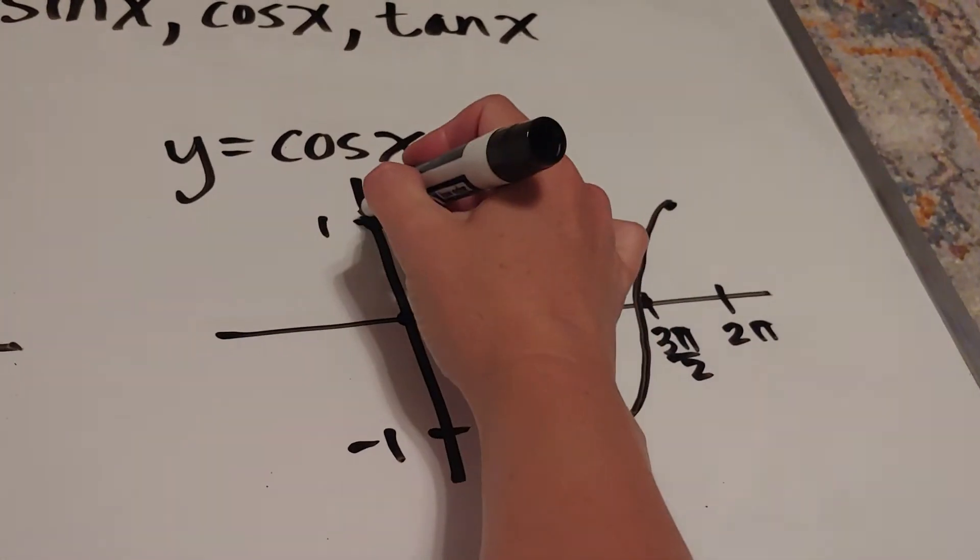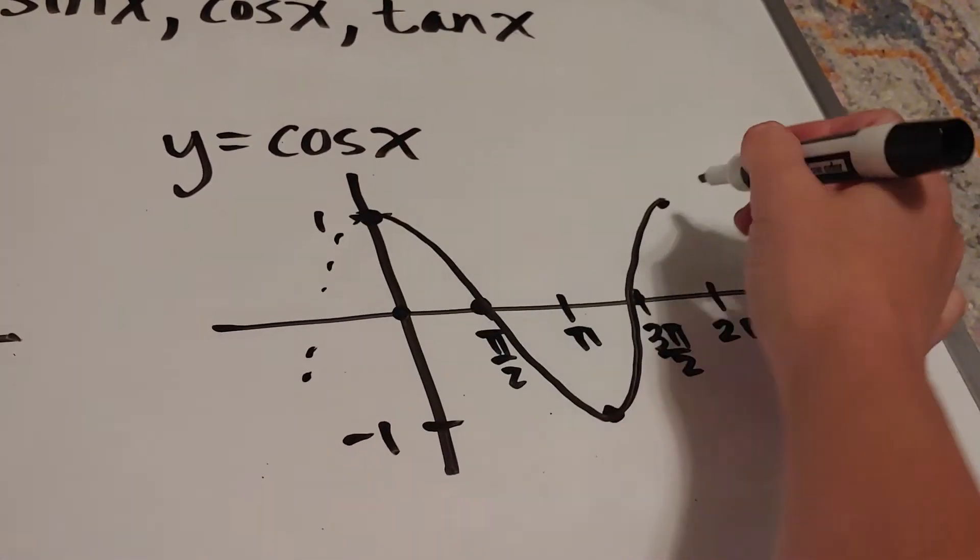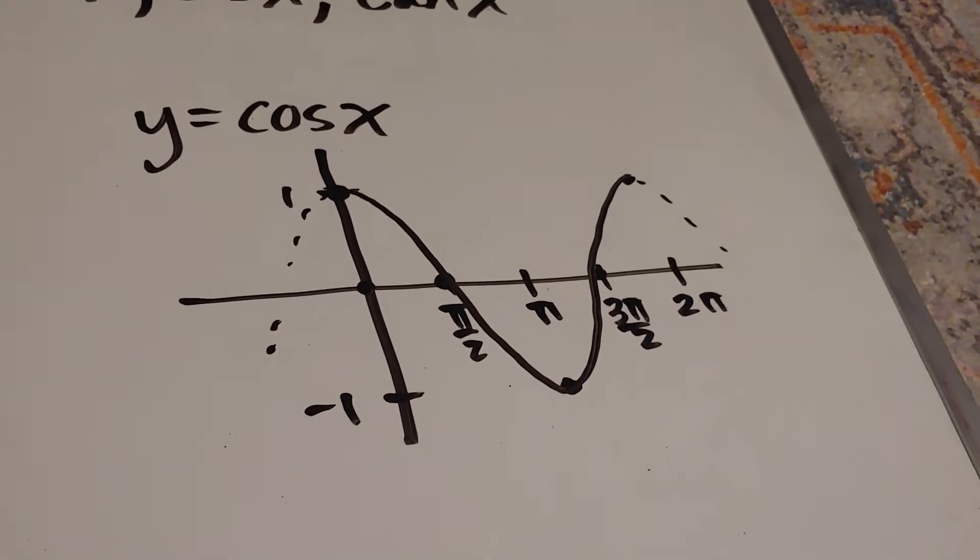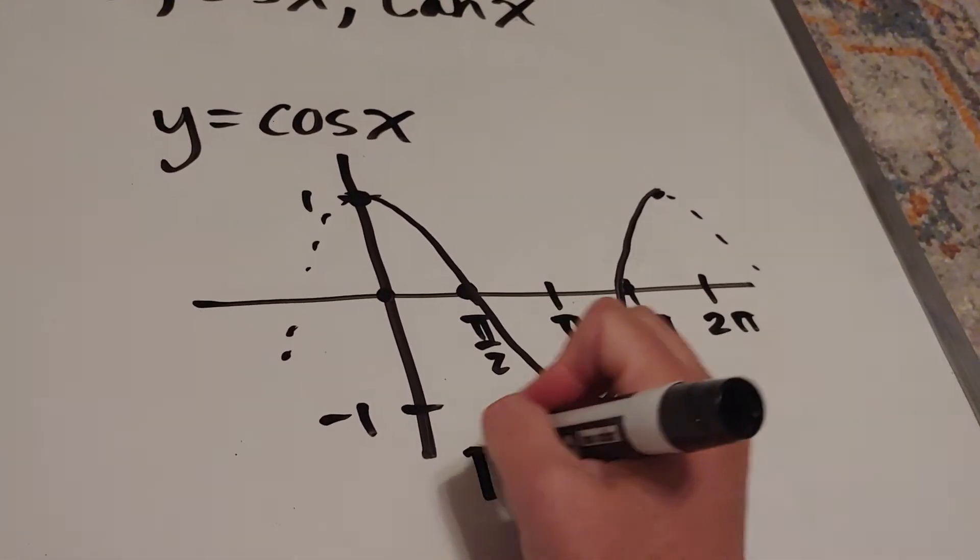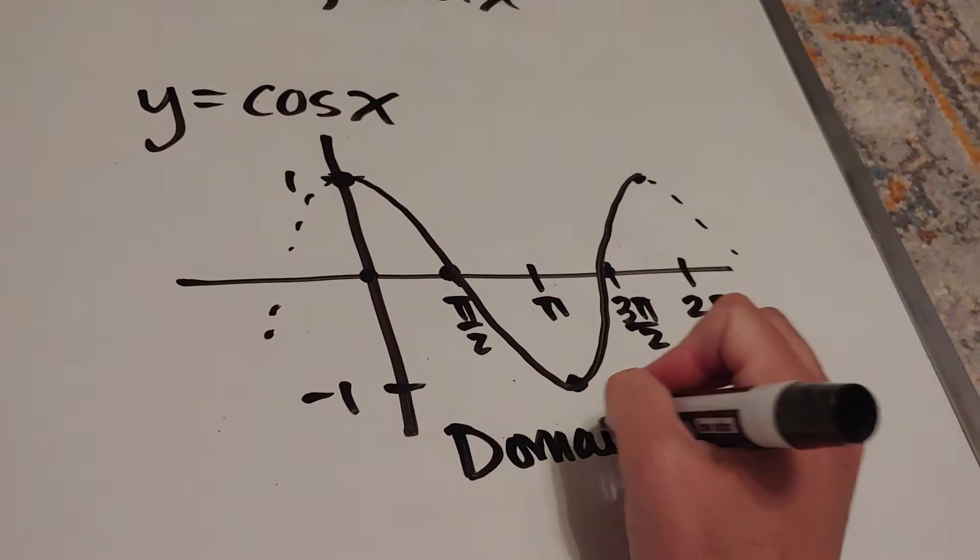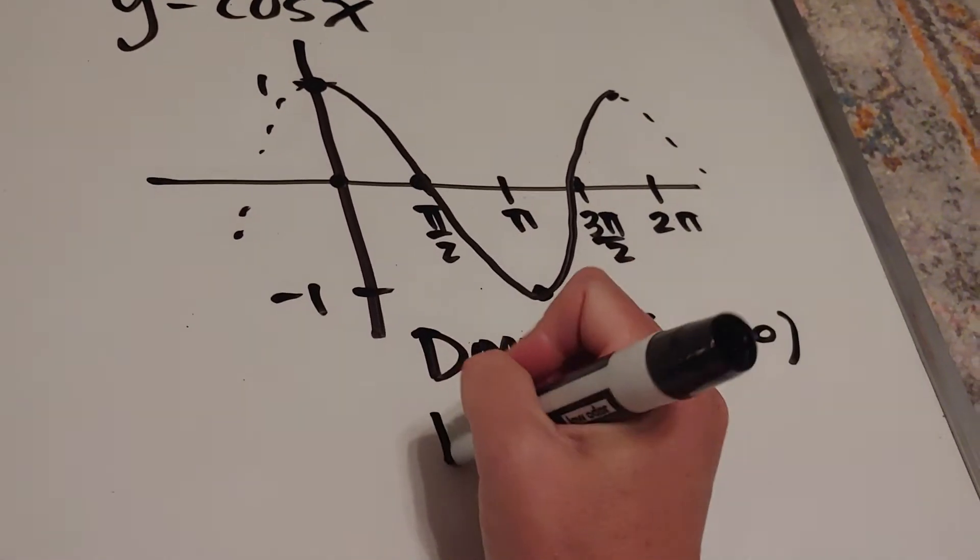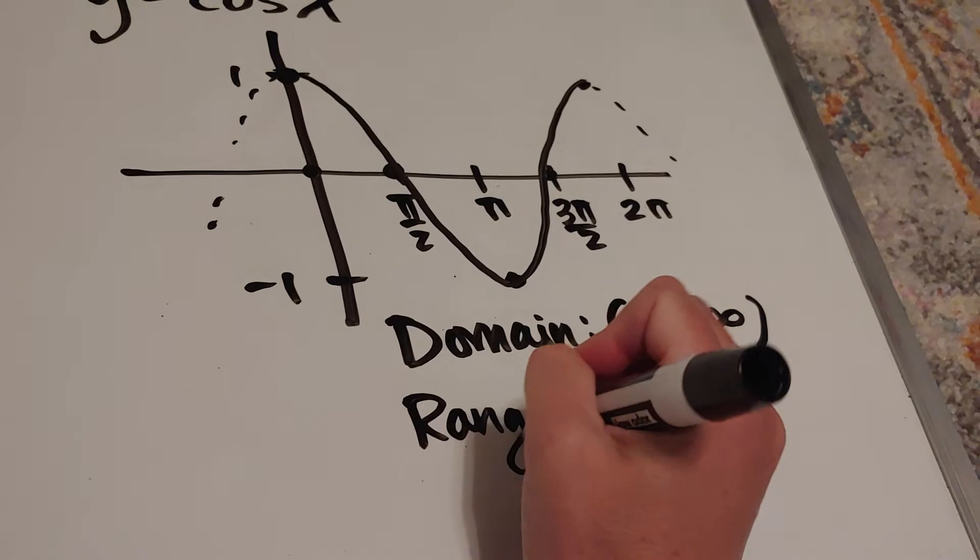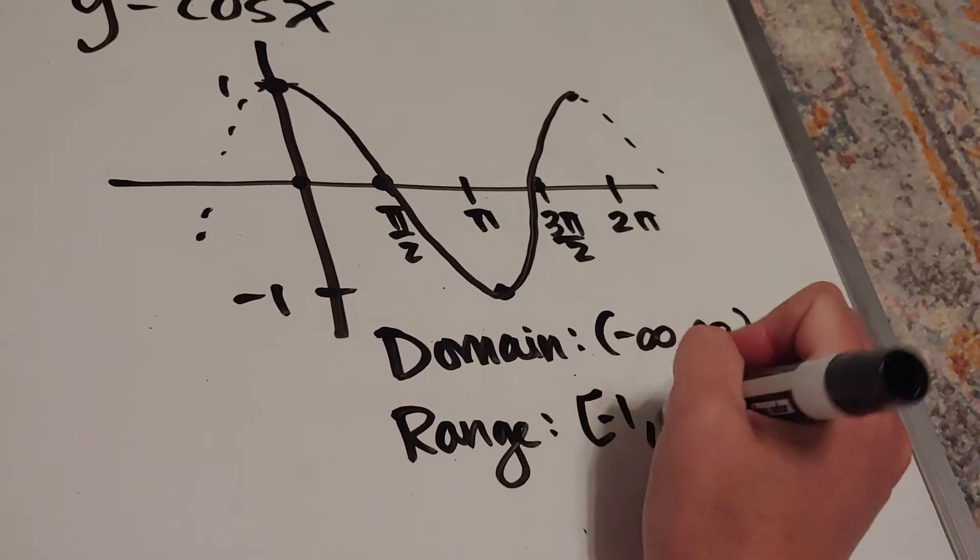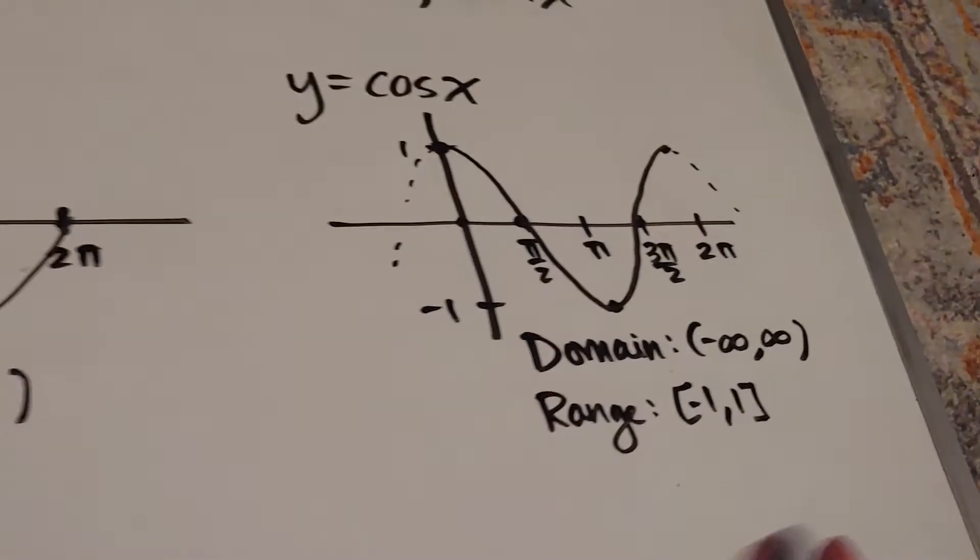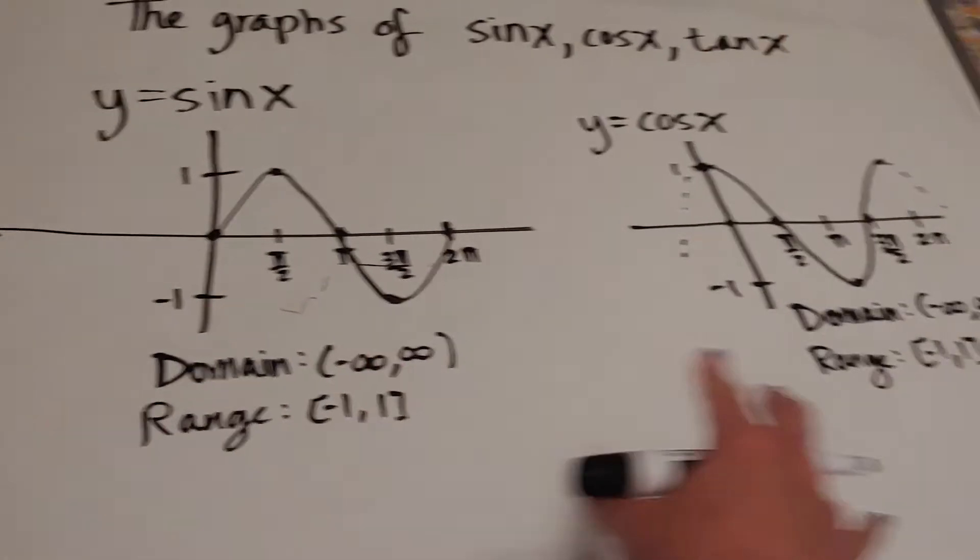Its graph looks like that. It keeps going, so it'll keep going this way and this way. Its domain is also continuous everywhere, and the range, again in the original form, is negative 1 to 1. Cosine, sine, beautiful.